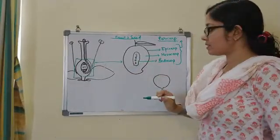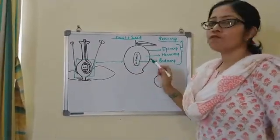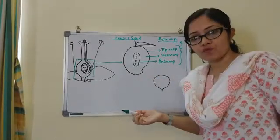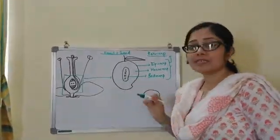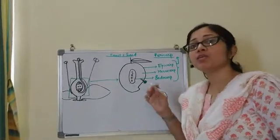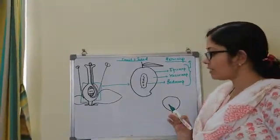So if I ask you what is a fruit, a fruit is the ripened ovary. And what is the seed? The seed is the ripened ovule.